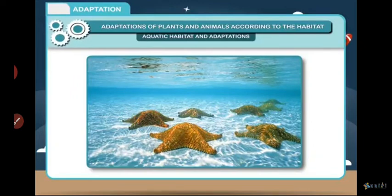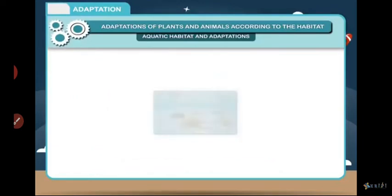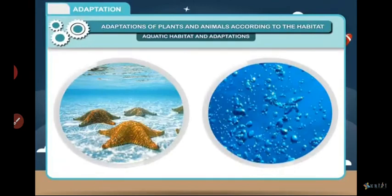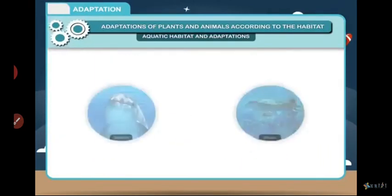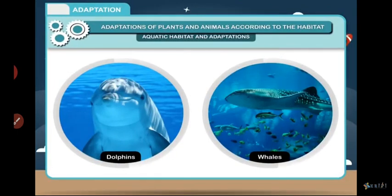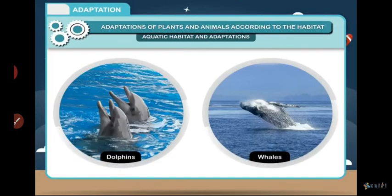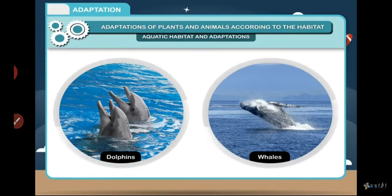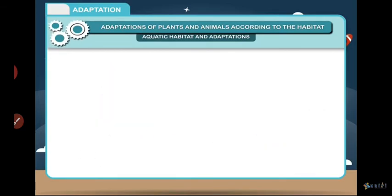Squid and octopus make a streamlined body shape when they move. These animals have gills which help them to use the oxygen dissolved in water. Some animals like dolphins and whales do not have gills — they breathe through nostrils and blowholes that are located on the upper part of their head.